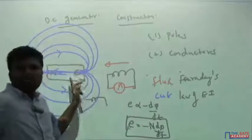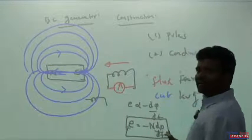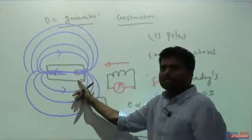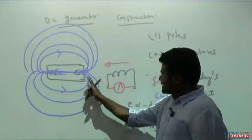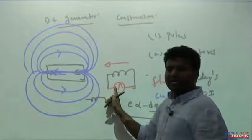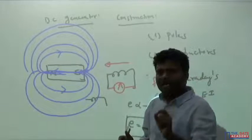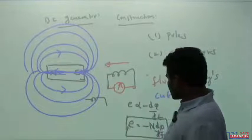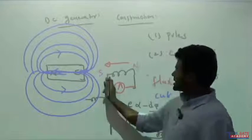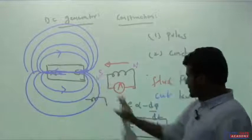So we have a conductor and poles — the number of poles can be increased as well. The minus sign in e = −N dφ/dt is explained as follows: when the conductor moves toward the south pole, a change in flux occurs, EMF is induced, current flows, and that current-carrying conductor produces its own magnetic flux. The coil acts as a magnet, with polarity such that it opposes the motion — causing repulsion. That opposition is represented by the minus sign.